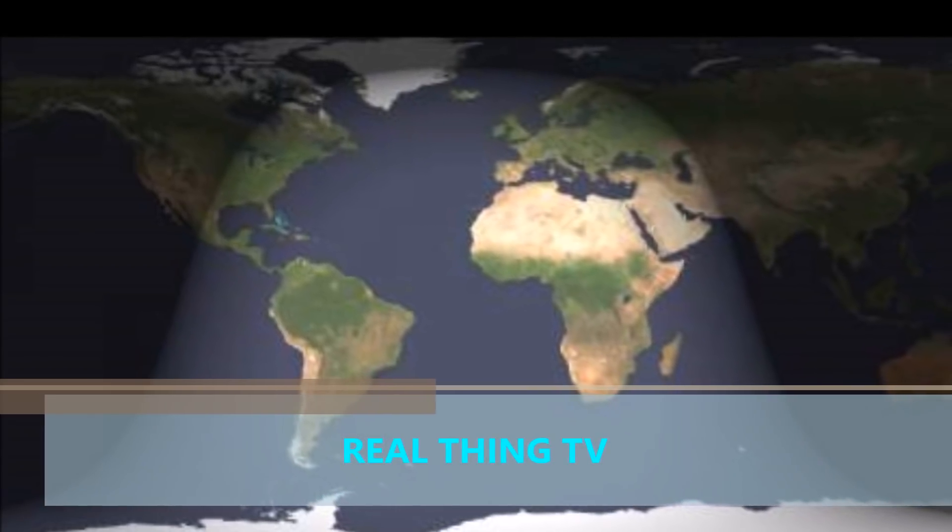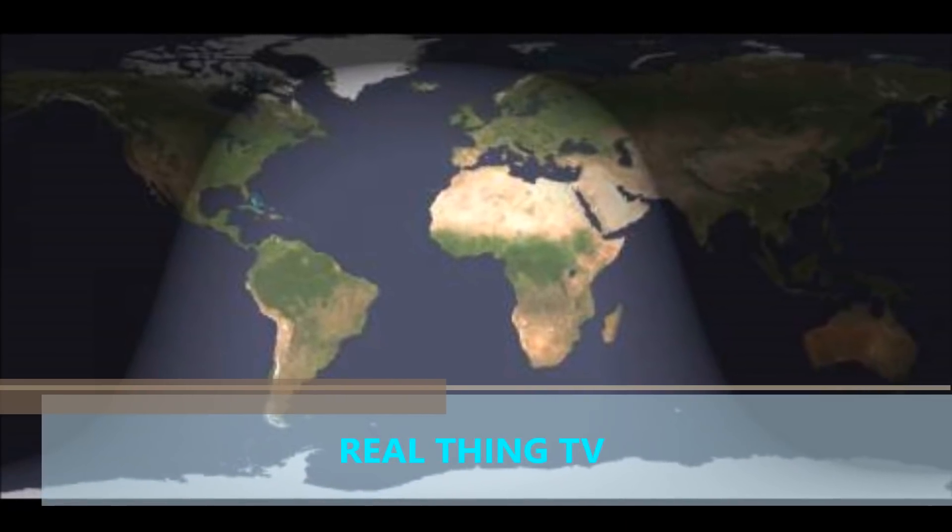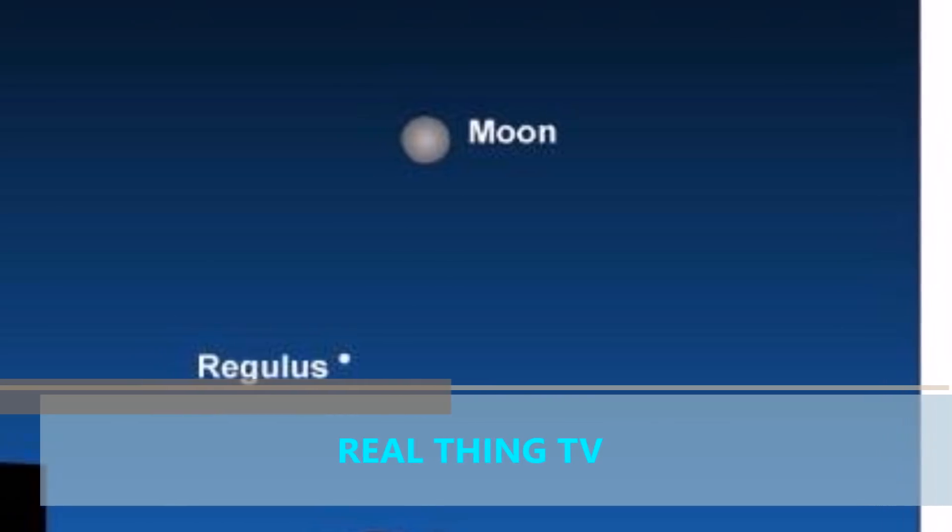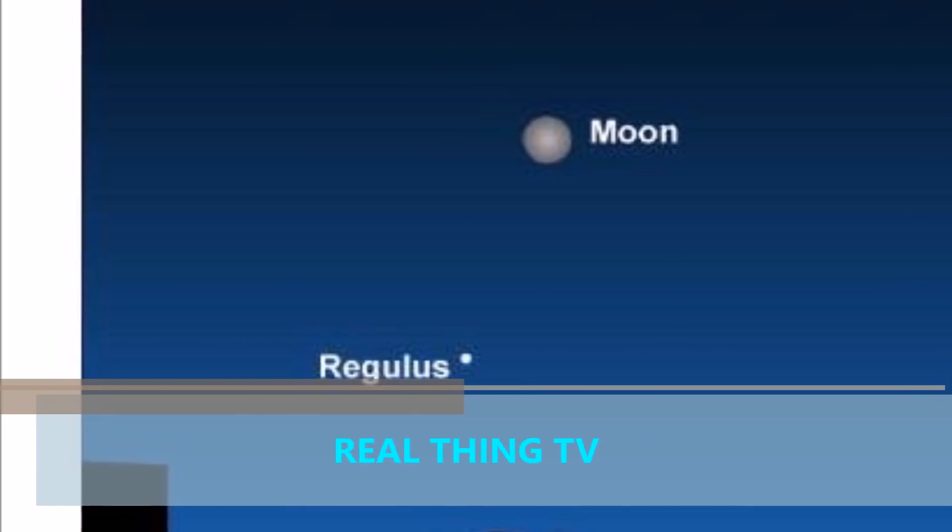According to EarthSky.org, if you live in North America or the Hawaiian Islands, remember that this lunar eclipse will be visible in your sky during the morning hours before sunrise on January 31.